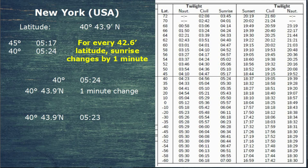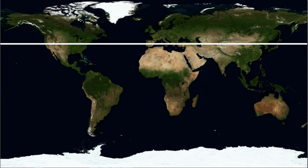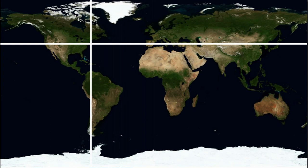But that's not the whole story. We move on to Step 2: finding the true time difference from the prime meridian. What we've found is the sunrise time on our latitude — but it's only that precise time on the Greenwich meridian. To find the exact time at our particular longitude, we need to work out the time difference celestially from the Greenwich meridian. Things happen later the further west you are.